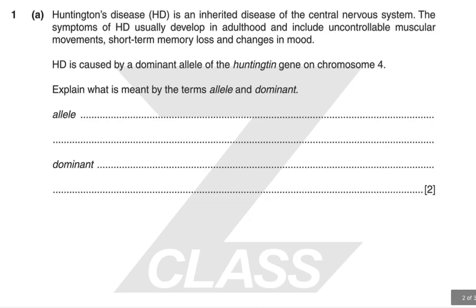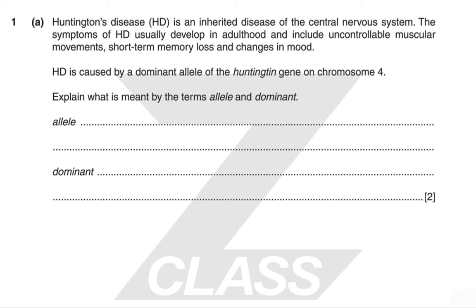First question. Huntington's disease is an inherited disease of the central nervous system. The symptoms of HD usually develop in adulthood and include uncontrollable muscular movements, short-term memory loss and changes in mood. HD is caused by a dominant allele of the Huntington's disease gene on chromosome 4. Explain what is meant by the terms allele and dominant.